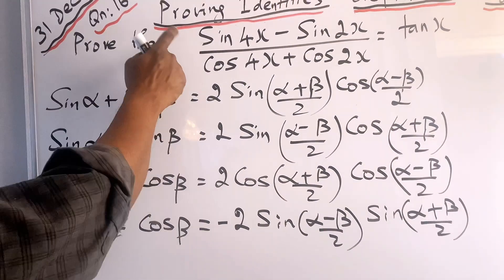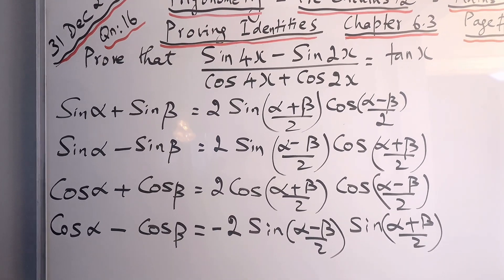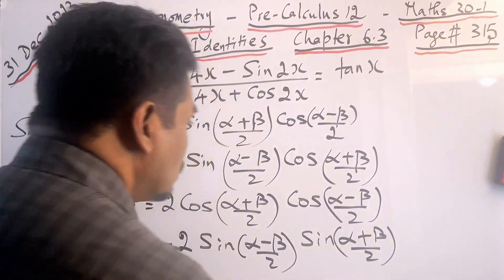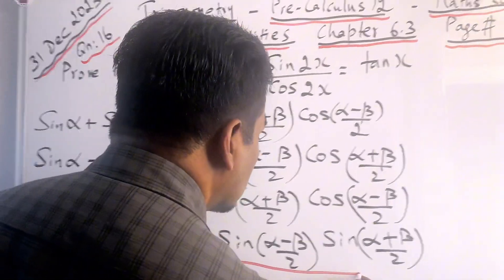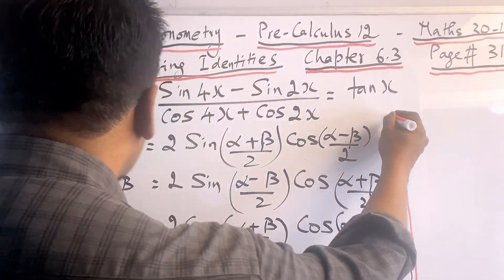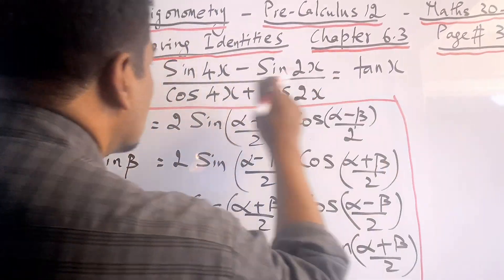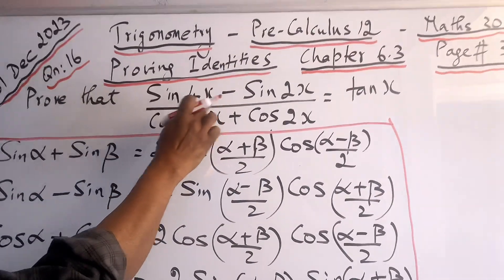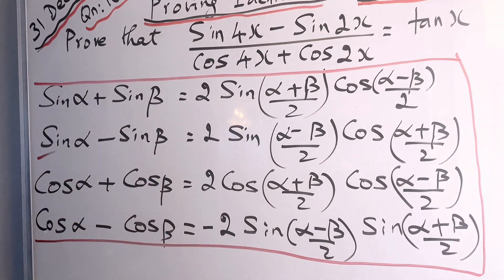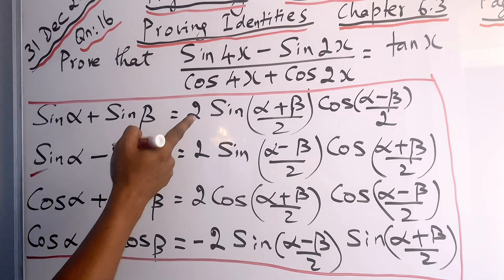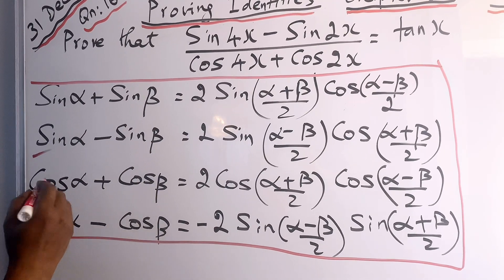Now let us look at the numerator part. I will highlight and select the formulas which are needed. The numerator is sin 4x minus sin 2x, which is connected to the second formula. The denominator, cos 4x plus cos 2x, is connected to the third formula.